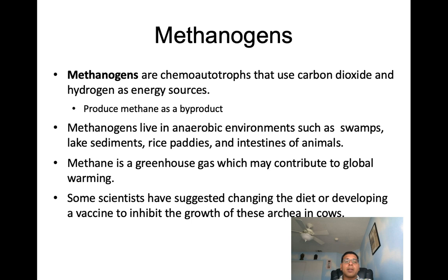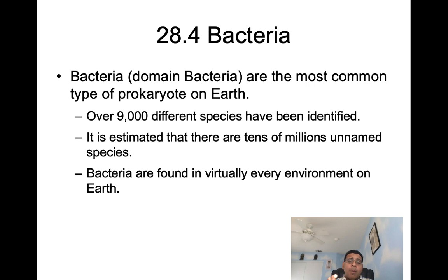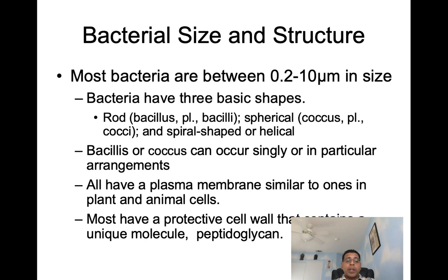Next, let's talk about bacteria in greater detail. Bacteria are the most common type of prokaryote found on Earth. About 9,000 different species have been identified or named, but the number of unnamed species is probably in the tens of millions. Bacteria are found virtually in every environment on earth. Most bacteria are going to be between 0.2 and about 10 micrometers in size.